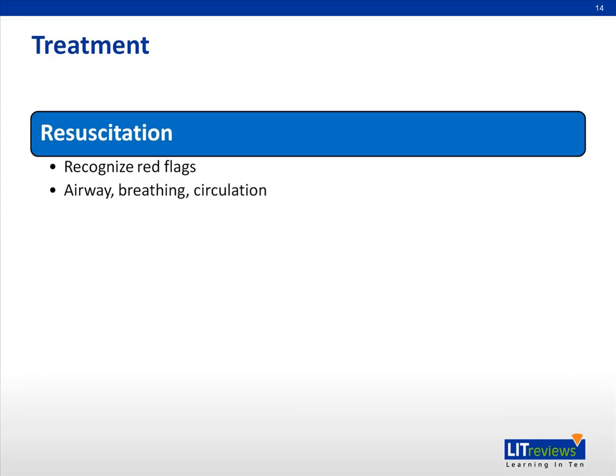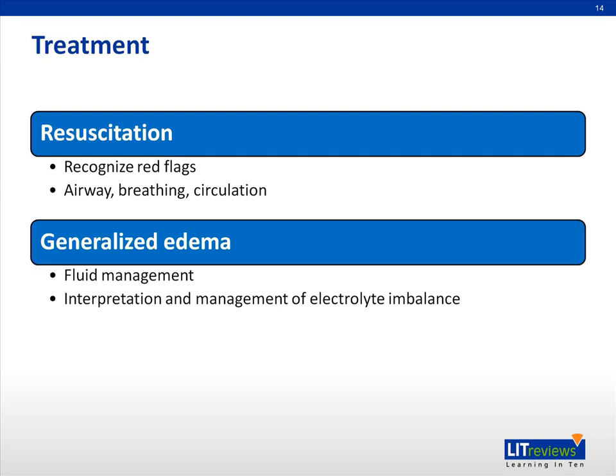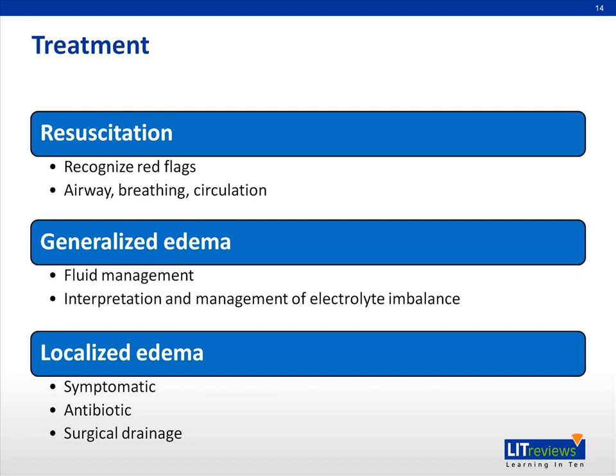Management of an edematous child should always start with recognizing red flags in an unstable child and initiating resuscitation by stabilizing the airway, breathing, and circulation. In a stable edematous child, the treatment will depend on the type and cause of edema. A core part of treatment for patients with generalized edema includes fluid and electrolyte management. The specific treatment plans will depend on the major organ affected and the underlying pathophysiology. For localized edema, we can provide symptomatic treatment such as antihistamine, antibiotic in topical or systemic forms, as well as surgical drainage such as incision and drainage.